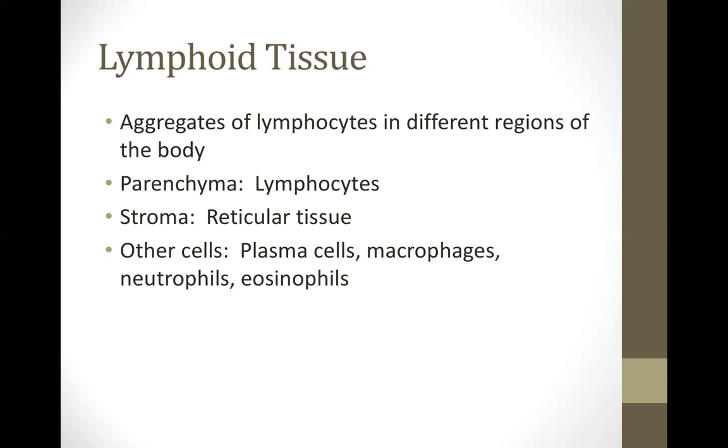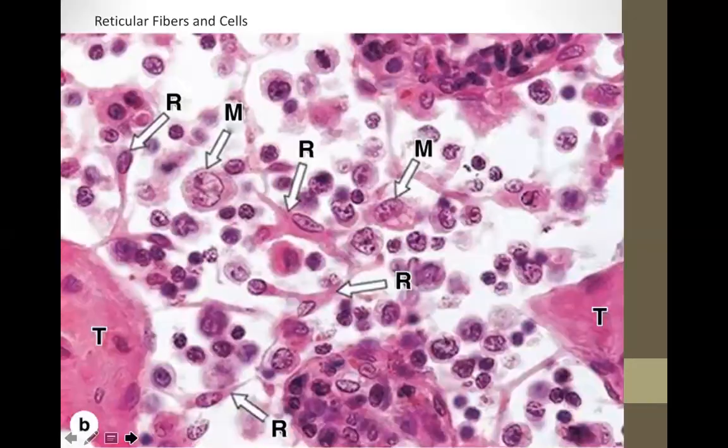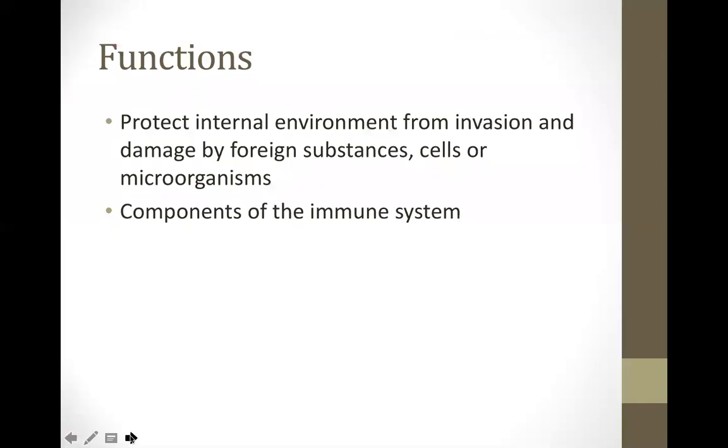Other cells found in the lymphoid tissue are plasma cells, macrophages, neutrophils, and eosinophils. This is an example picture showing lymphoid tissue composed of reticular fibers — labeled as letter R — and M stands for macrophages, which engulf certain microorganisms for phagocytosis.